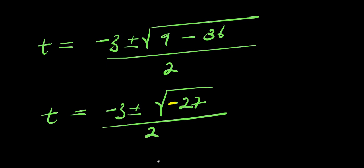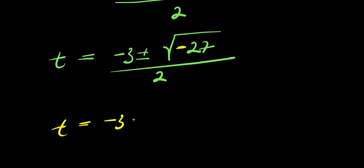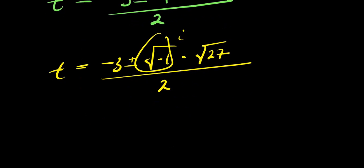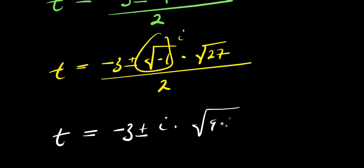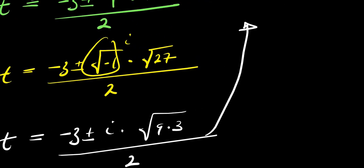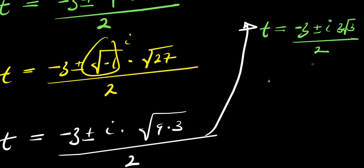Because of the negative under the square root, we write square root of negative twenty-seven as square root of negative one times square root of twenty-seven, divided by two. The square root of negative one gives us i. And square root of twenty-seven is square root of nine times three, which is three root three. So t equals negative three plus or minus three i root three, divided by two. We can factor out three over two: t equals three over two times negative one plus or minus i root three.